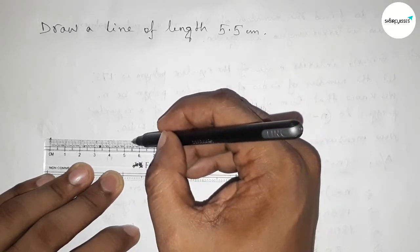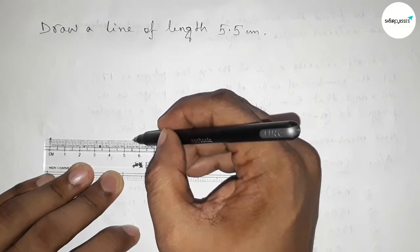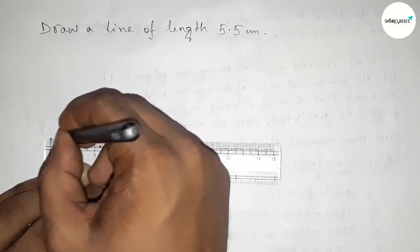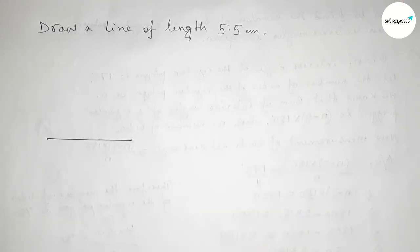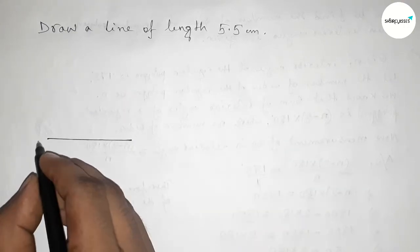So first marking this five point five and joining this line, okay. Now taking here point A and here B.